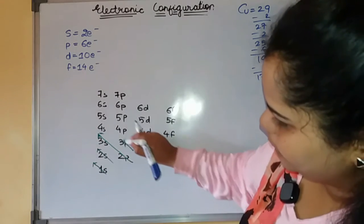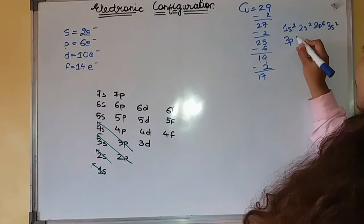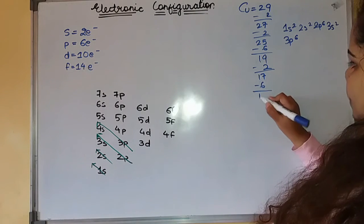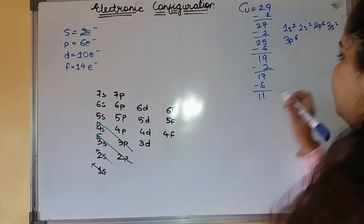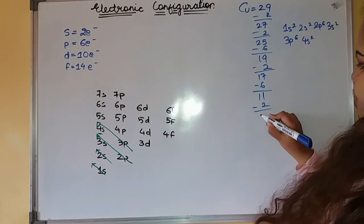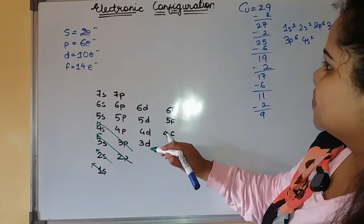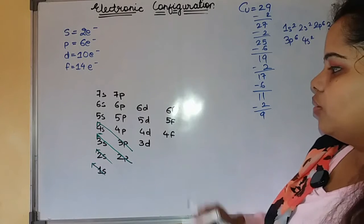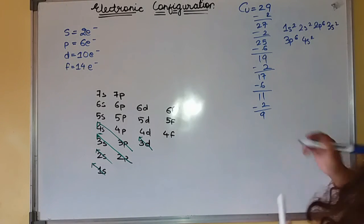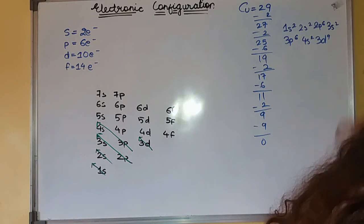Then again, 3p and 4s. 3p⁶, and 4s will only incorporate 2. So you will remain with this. 3d, since it incorporates 10 electrons and you have only 9, so just write down 3d⁹.